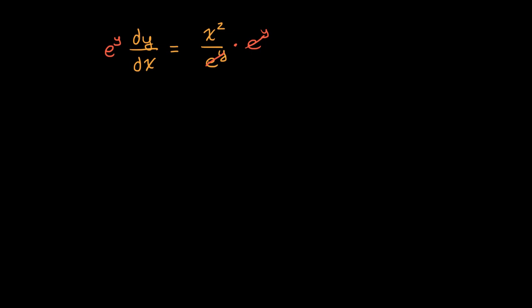So I'm gonna multiply both sides by e to the y and I'm also gonna multiply both sides by dx, times dx. Multiplying by dx gets rid of the dx on the left hand side and it sits on the right hand side with the x squared.